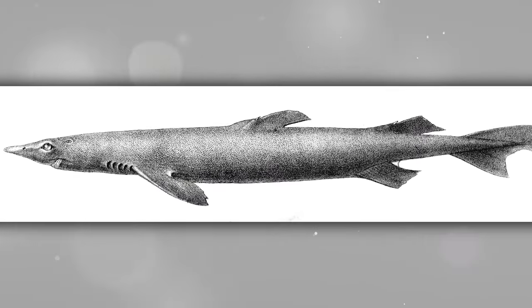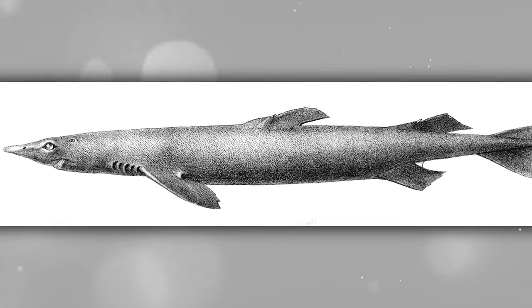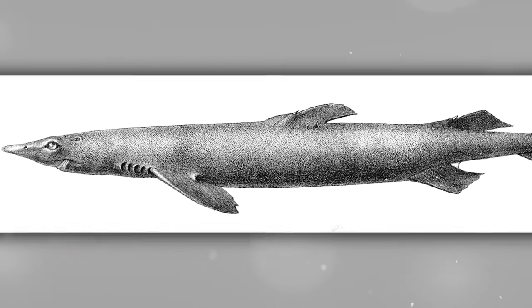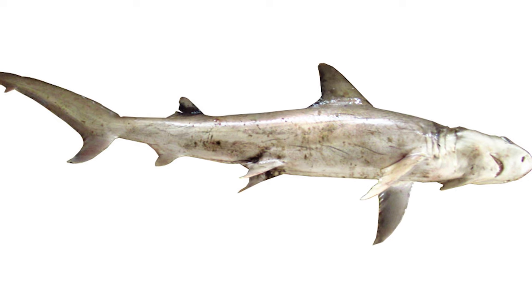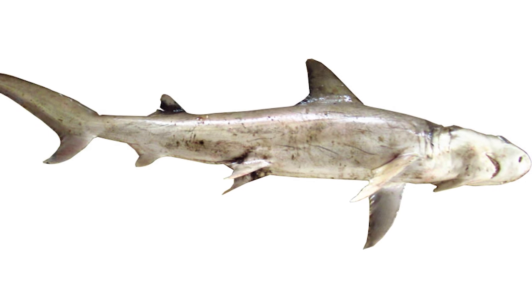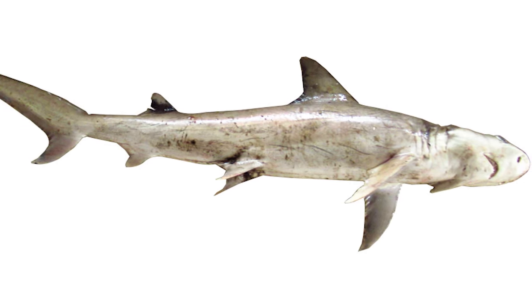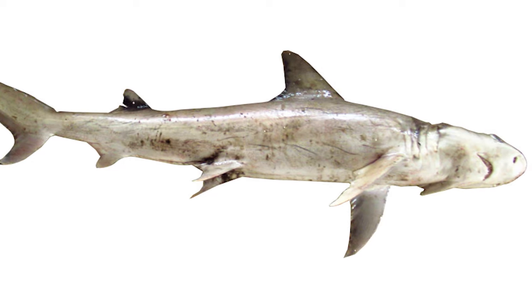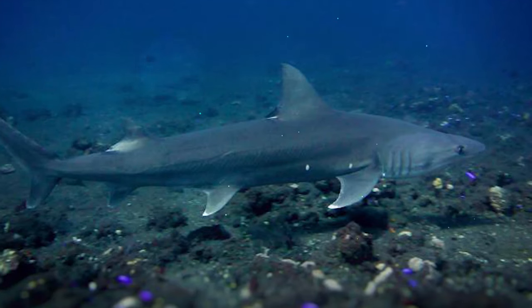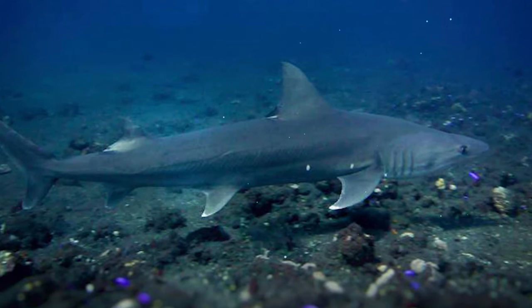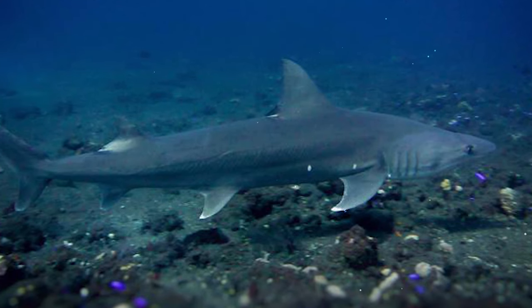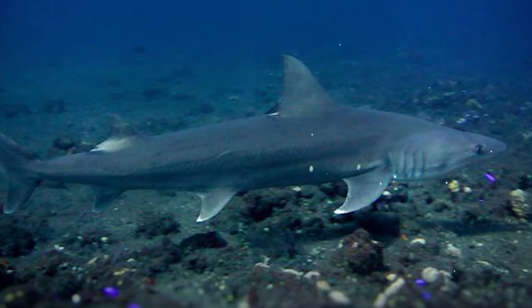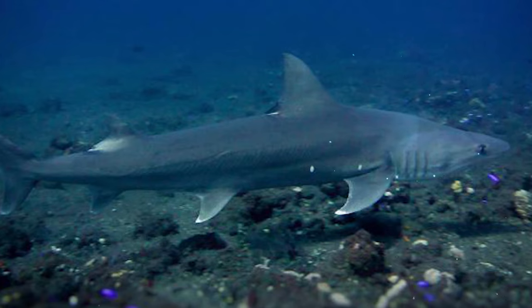Hemipristis are ray-finned fishes in the family Hemipristidae. These creatures are distributed in all tropical and subtropical regions of the world's oceans, found both at depths of up to 1,000 meters and near the surface. The maximum recorded size of these fish is 2 meters, and they feed predominantly on smaller fish.